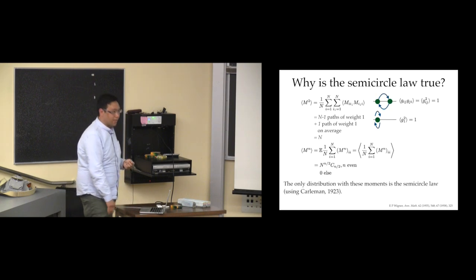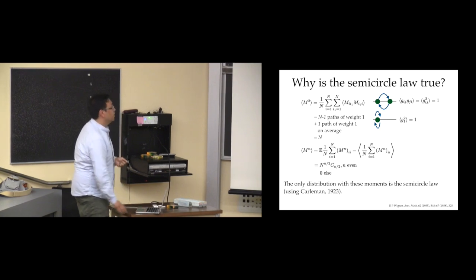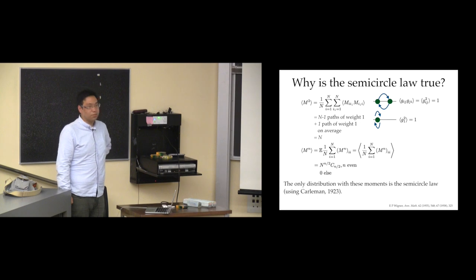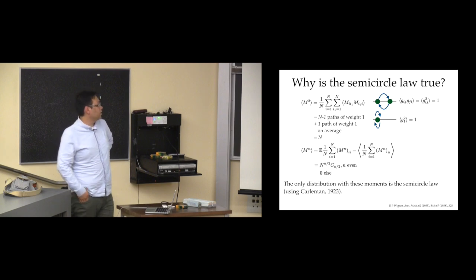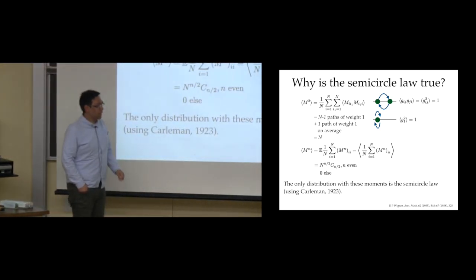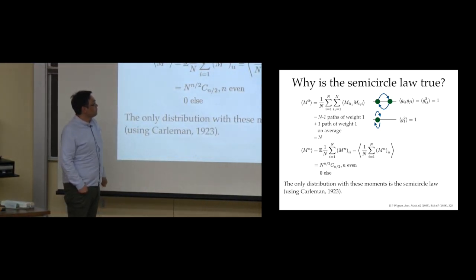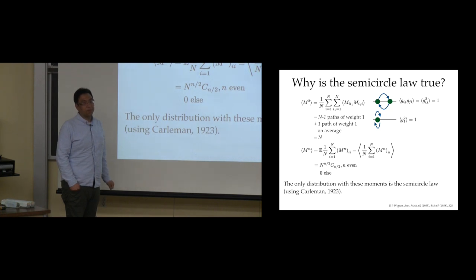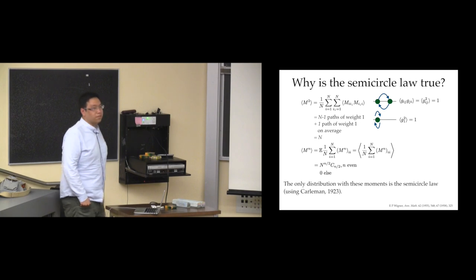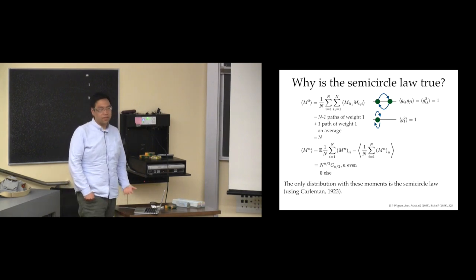If you calculate the moments of not just M squared but all the M's, you can show this is essentially proportional to a number the combinatorial mathematicians are fond of — the Catalan number, C_{n/2}. You can show that the semicircle distribution is the only unique distribution that has these moments. That's essentially the proof Wigner went through.